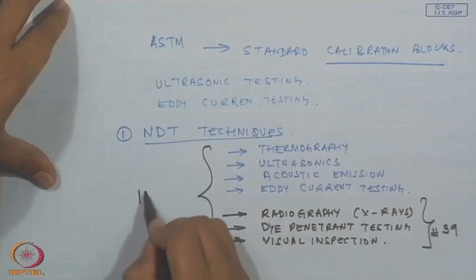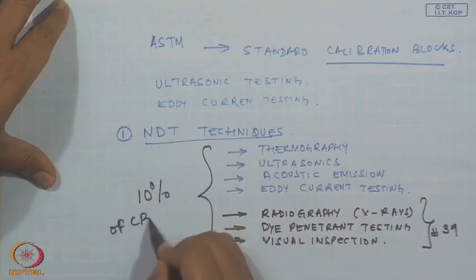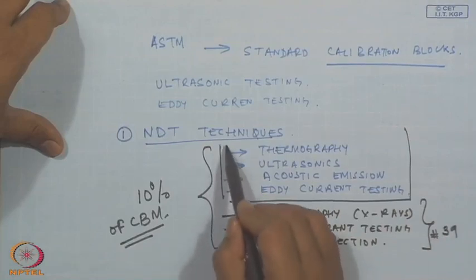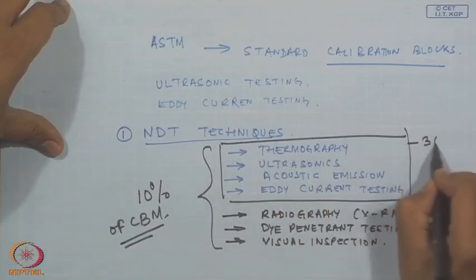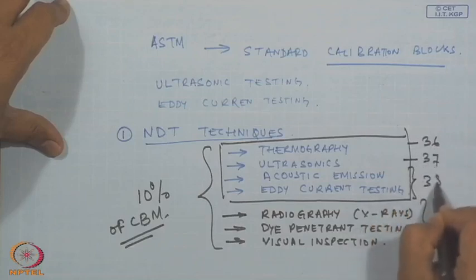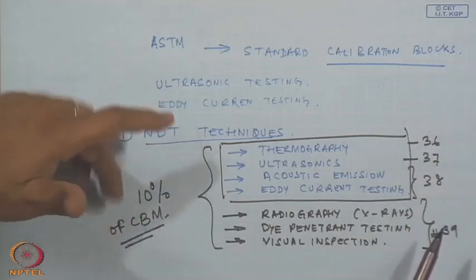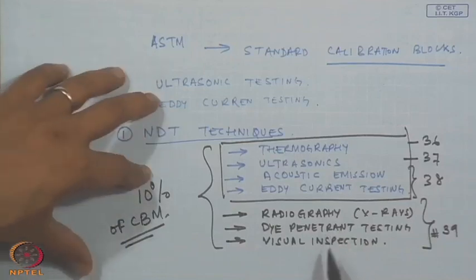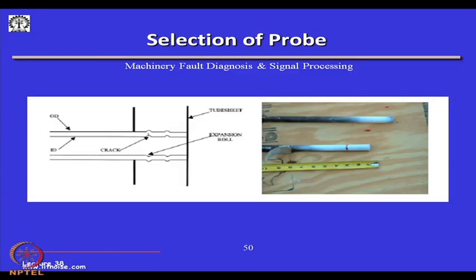Almost 10 percent of CBM — condition-based maintenance — uses such NDT techniques. These four techniques have been covered over lectures 36, 37, and 38. When using eddy current testing, one has to be very careful about frequency, diameter of the probe, traversing speed, and magnetic permeability.